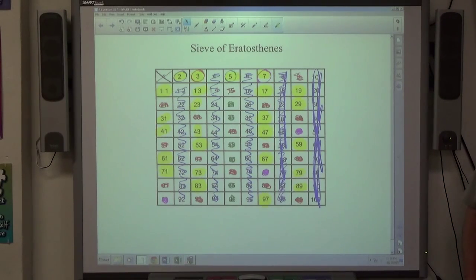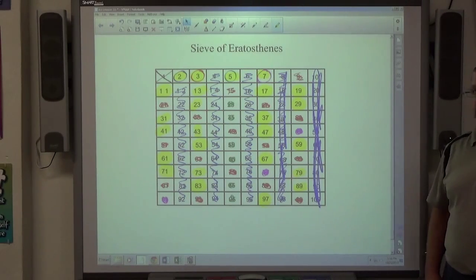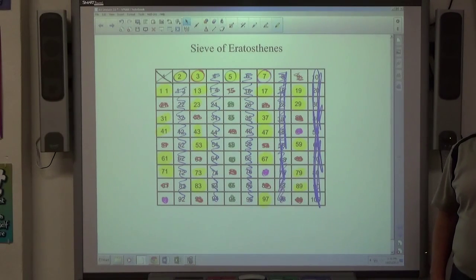2, 3, 5, 7, 11, 13, 17, 19, 23, 29, 31, 37, 41, 43, 47, 53, 59, 61, 67, 71, 73, 79, 83, 89, 97. Those are all the primes. Thank you.